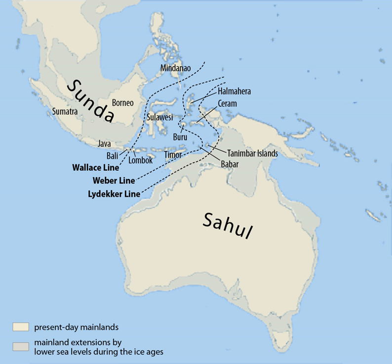The warm and shallow seas of the Sunda Shelf are part of the Indo-Pacific Warm Pool and Western Pacific Warm Pool, and are an important driver of the Hadley circulation and the El Niño-Southern Oscillation (ENSO), particularly in January when it is a major heat source to the atmosphere. ENSO also has a major influence on the climate of Sundaland; strong positive ENSO events result in droughts throughout Sundaland and Tropical Asia.